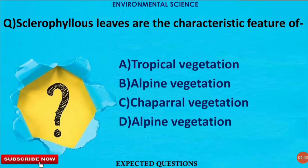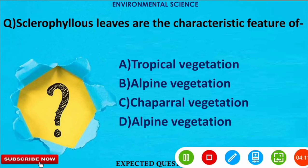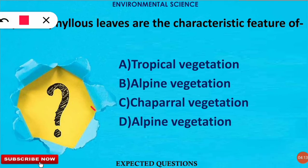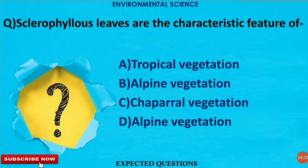The next question is: sclerophyllous leaves are the characteristic feature of which kind of vegetation? This question is asked frequently, and the correct option is option C — chaparral vegetation. In chaparral vegetation, where there is lack of water and hot, dry conditions, the leaves are sclerophyllous to avoid water loss.